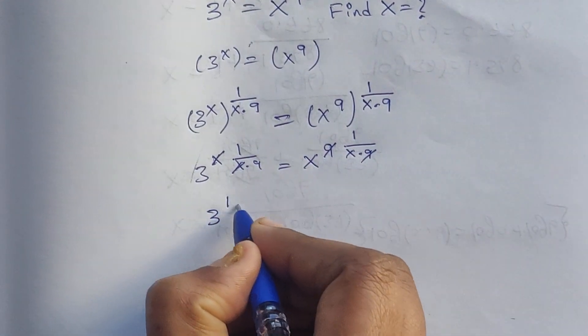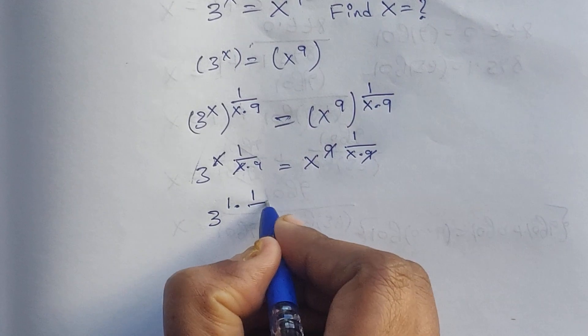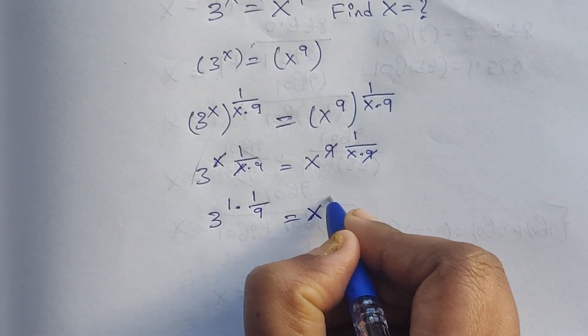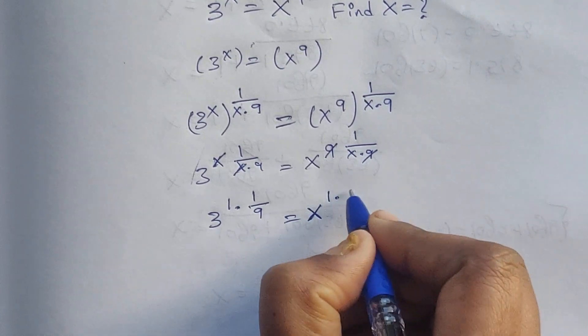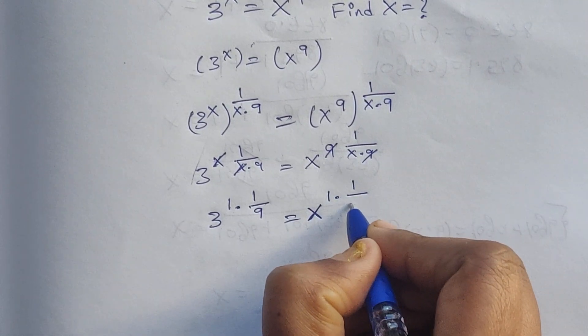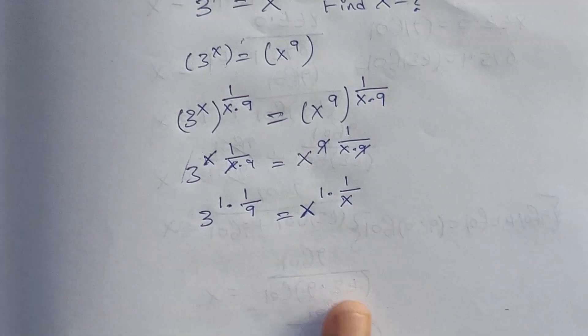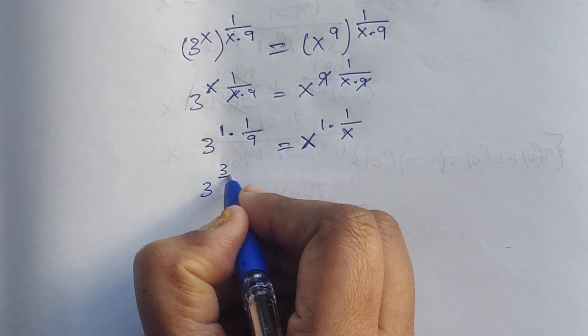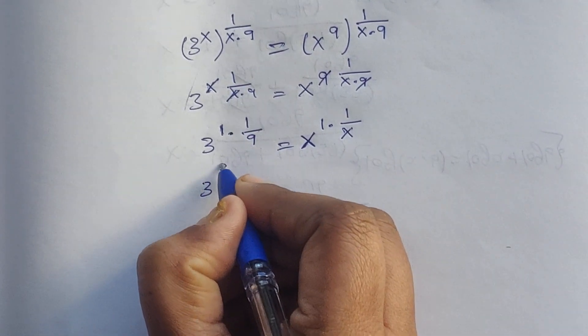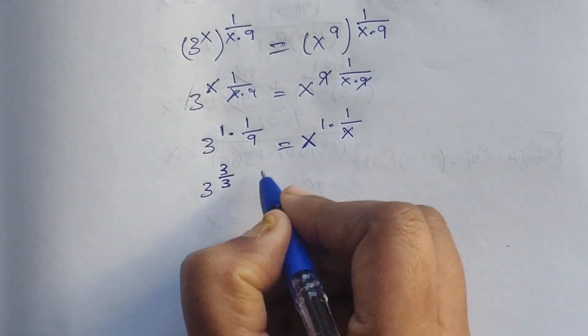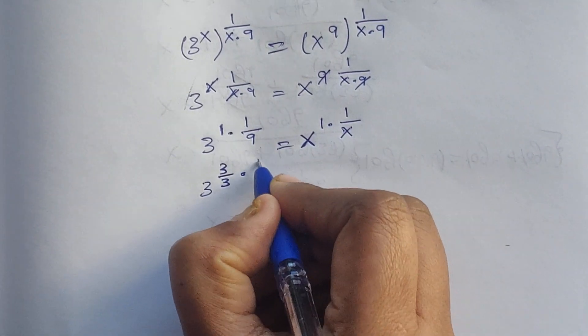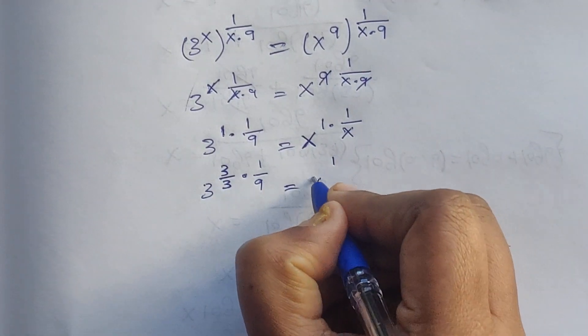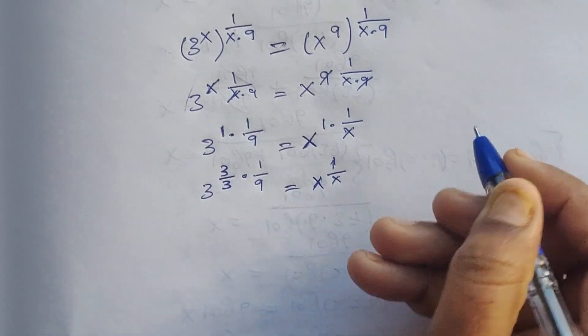3 to the power of 1 times 1 divided by 9 equals x to the power of 1 times 1 divided by x. Here we have 1, which we can write as 3 divided by 3, times 1 divided by 9, equals x to the power of 1 divided by x.